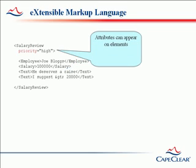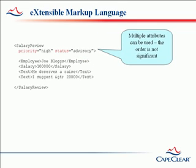Elements can have attributes attached to them, as shown in this example. These are name-value pairs included within the start tag of the element. An element can have multiple attributes as long as the names are unique. The order of the attributes does not matter.